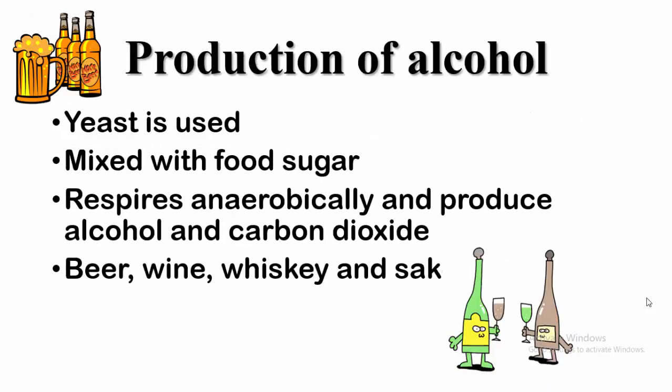Next is the production of alcohol. Yeast is used in the production of alcohol. Yeast is mixed with sugar found in food substances used in brewing, such as barley, grapes, etc. In the absence of oxygen, the yeast respires anaerobically to produce alcohol and carbon dioxide from the sugar. Examples of alcohol brewed in this manner include beer, wine, sake, and whiskey.